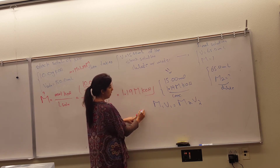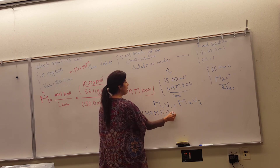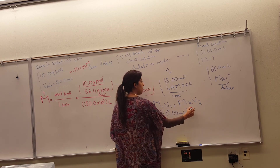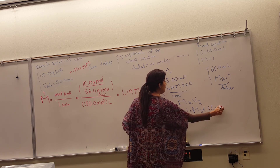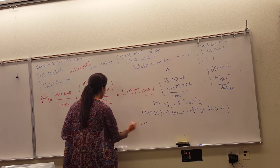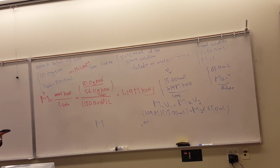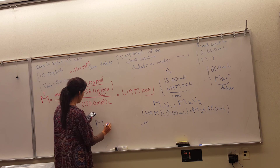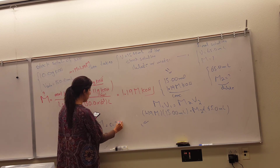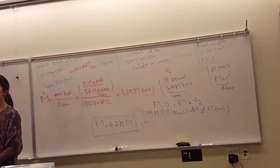We do another M1V1 = M2V2. M1 is 1.19 molar potassium hydroxide, V1 is 15 milliliters, and V2 is 65 milliliters. Solving for M2 — the molarity of the final solution — gives: 1.19 × 15 ÷ 65 = 0.275 molar. So 0.275 molar is the molarity of the final solution.